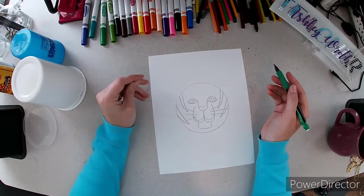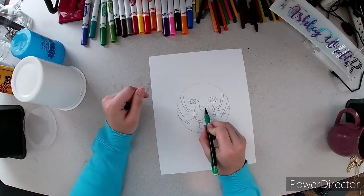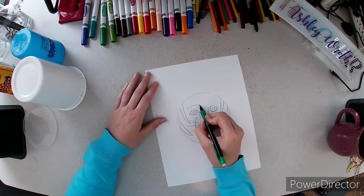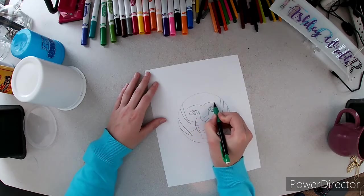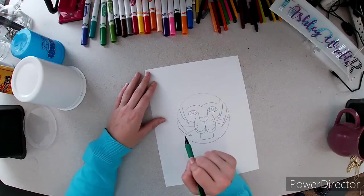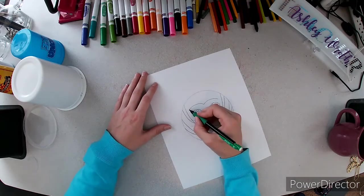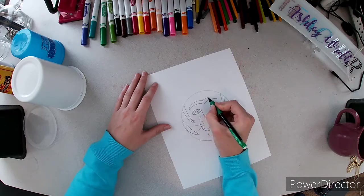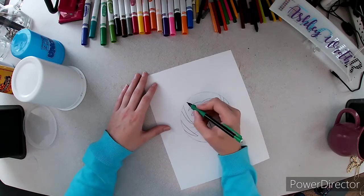Now for a tiger's forehead it's kind of like the top of a heart. So starting over here we're going to curve down and then curve over almost like a unibrow but it's not a unibrow. Then we're going to match these lines and do another one.